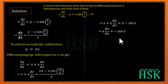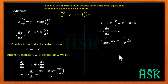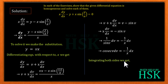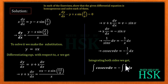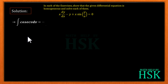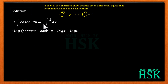Separating the variables, we write (1/sin v)·dv = minus(1/x)·dx, or equivalently cosec(v)·dv = minus(1/x)·dx. Integrating both sides gives the integral of cosec(v)·dv equal to minus the integral of (1/x)·dx.